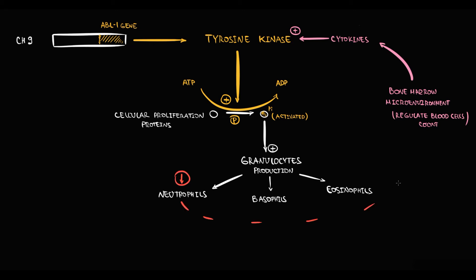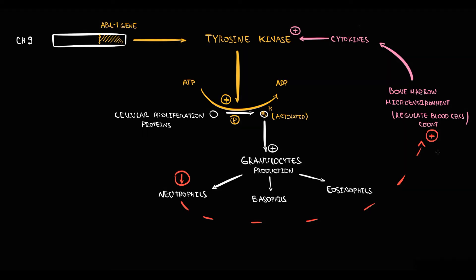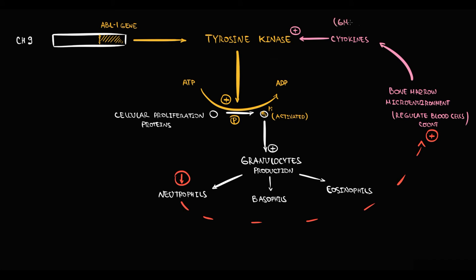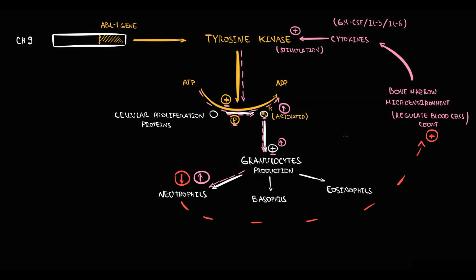They sense that the amount of neutrophils begins to decrease. In order to correct this, cells from the bone marrow microenvironment secrete various cytokines such as granulocyte-macrophage colony-stimulating factor, interleukin-3, or interleukin-6. These cytokines stimulate tyrosine kinase, and in response tyrosine kinase phosphorylates and thereby activates proteins responsible for cell proliferation. As a result, the amount of granulocytes — in this case neutrophils — will increase, and by this we maintain the normal quantity of granulocytes in the blood.